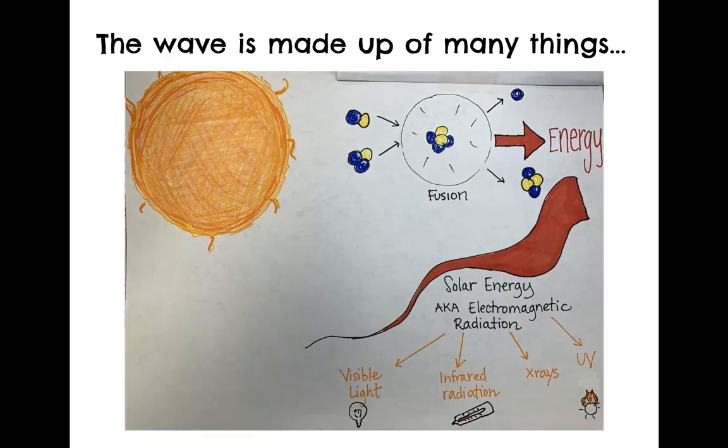So what are those? Well, visible light is the light that we see. Infrared radiation is the part of the wave that ends up heating up objects. X-rays have a lot of energy. And UV rays are the kind of light wave that is responsible for giving us a sunburn. This is why we need to wear sunscreen when we're out in the sun for prolonged amounts of time.